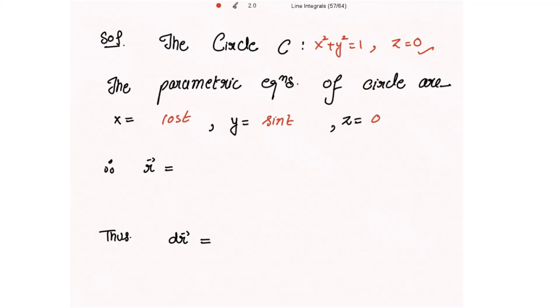Because it is the x, y, z plane, we write r vector as xî + yĵ + zk̂. Writing r vector in terms of t: x = cos(t) gives cos(t)î, y = sin(t) gives sin(t)ĵ, and z = 0, so the k̂ component is 0.